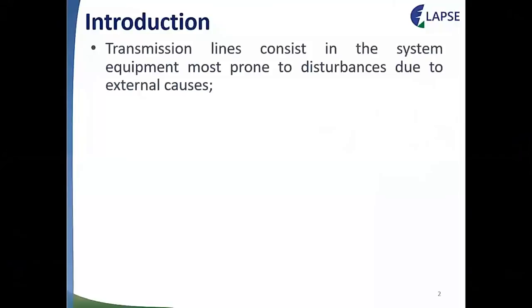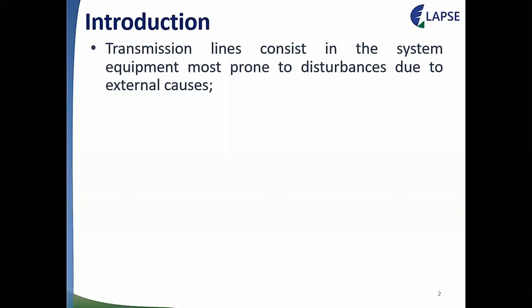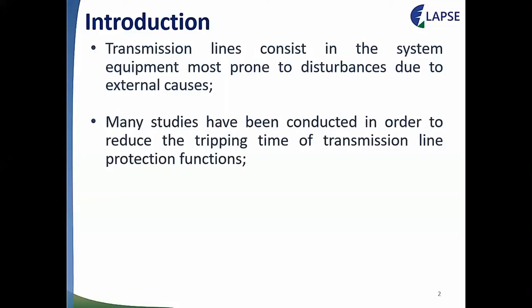Transmission lines are the system equipment most prone to faults due to external causes. Thus, the transmission line protection system must be fast and efficient in order to isolate the faulted equipment, safeguarding the protected equipment. Because of this, many studies have been conducted around the world to reduce the tripping time of transmission line protection functions, which has brought several benefits.